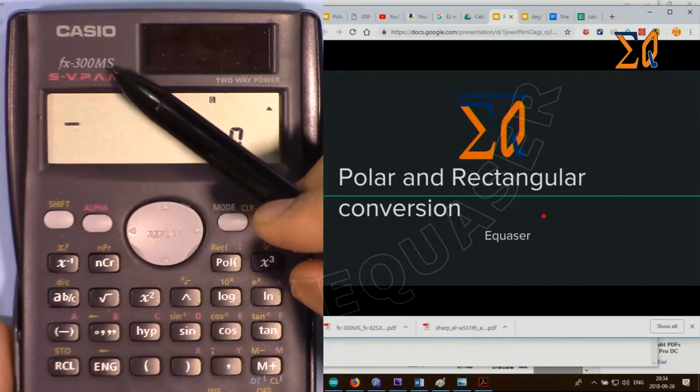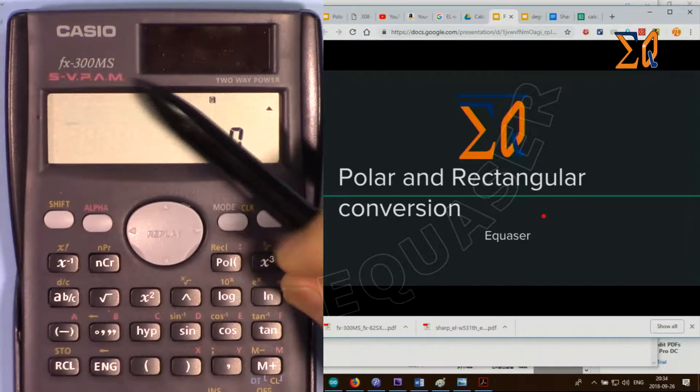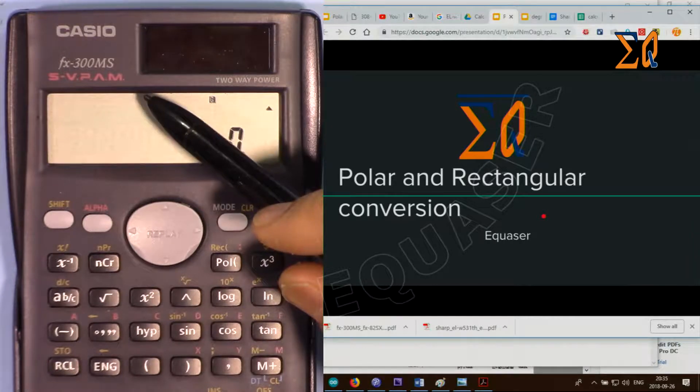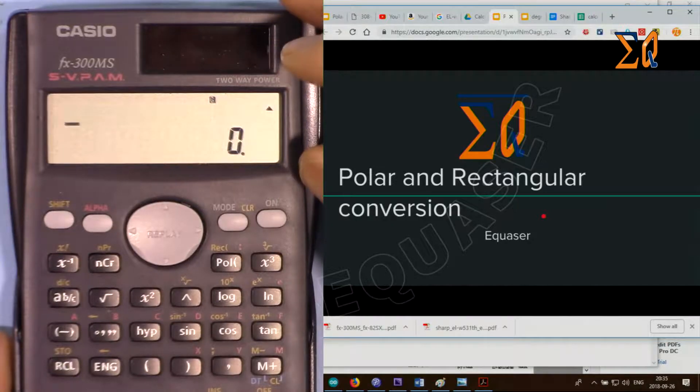The Casio FX-300MS, FX-350MS, FX-85MS, and FX-220 Plus all use the same procedure that I'm demonstrating here.